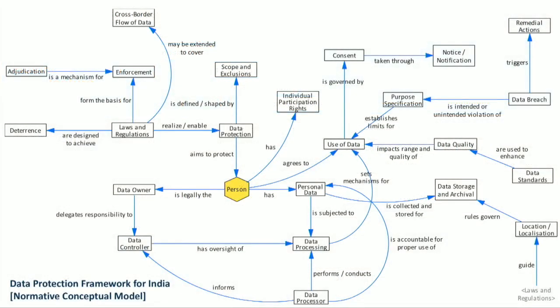Data protection is a key aspect of data in government. A data protection framework is currently being designed — work in progress — covering: use of data, individual rights, consent, data quality through data standards, laws and regulations, adjudication, enforcement, and even cross-border flow of data. Many countries restrict citizen data from flowing outside the country. This is analogous to what India is doing with its own GDPR-like framework currently being designed.